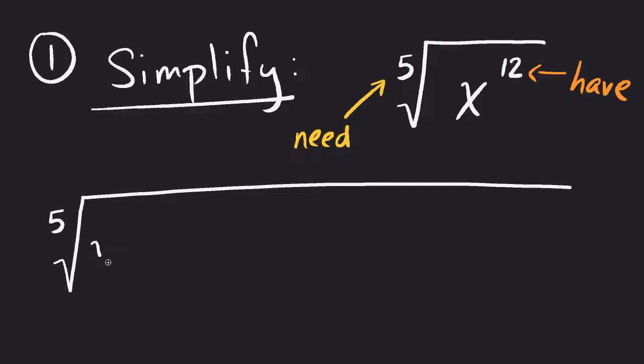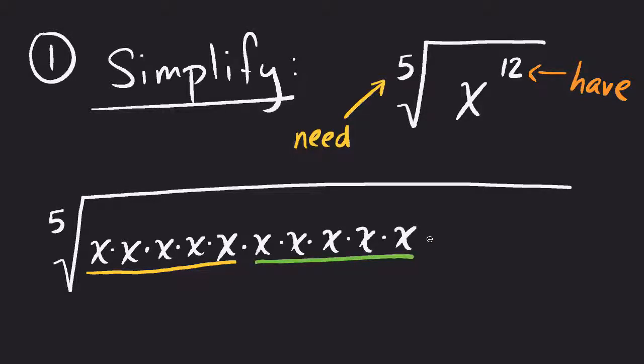Here's my 5. I've got 1, 2, 3, 4, 5. That would be one set right there. 6, 7, 8, 9, 10, so there's another set. 11, 12. So there's my 12 x's that are under there.